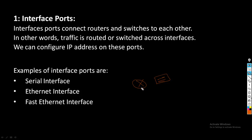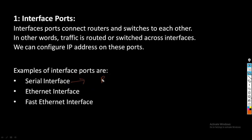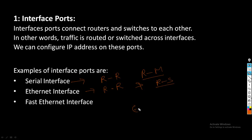We can configure IP addresses on interface ports. A few examples of interface ports are: serial interface, Ethernet interface, and Fast Ethernet interface. Serial interface is used to connect router to router and router to modem. Ethernet interface is used to connect router to router and router to switch.